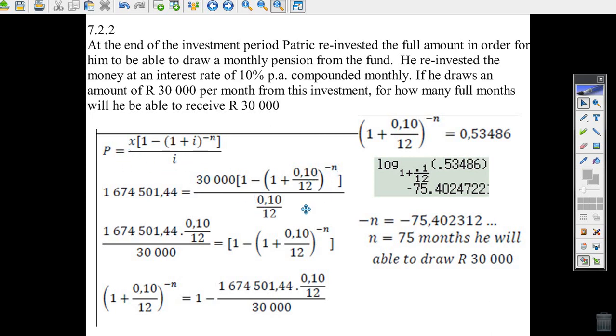So if you put in all the right things, you get some marks. Now all you do, multiply this through by 0.1 over 12, divide by 30,000, and you'll get a fraction. And then if you go 1 minus that thing in your calculator, you'll get a number. It'll be 0.53486 and a few other things.